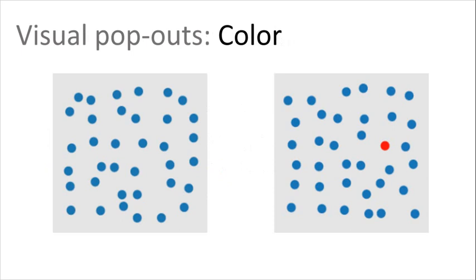The target object has a visual property, red, that the blue distractor objects don't have. And so it's really easy for us without even thinking that we know that the image on the right has a red dot.